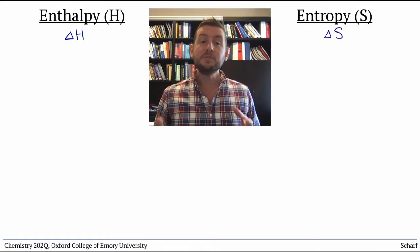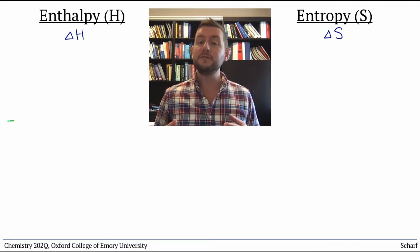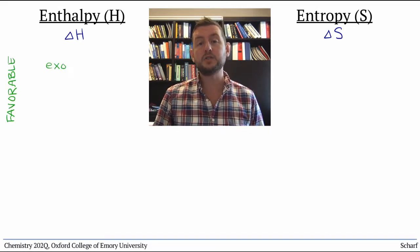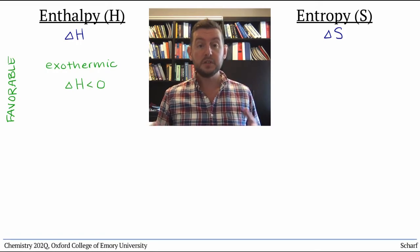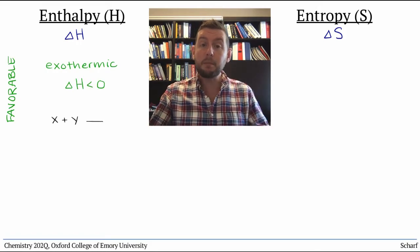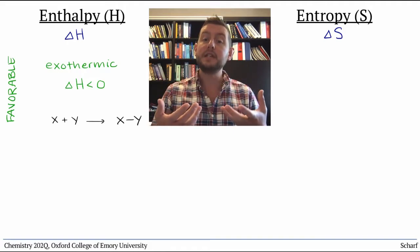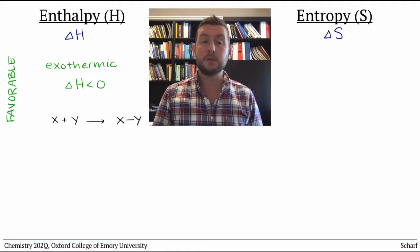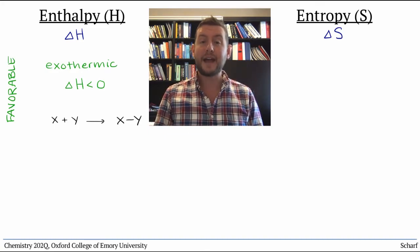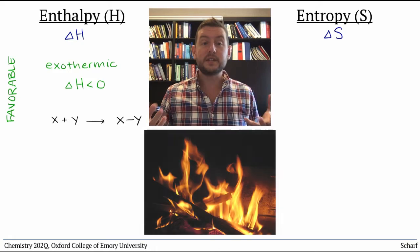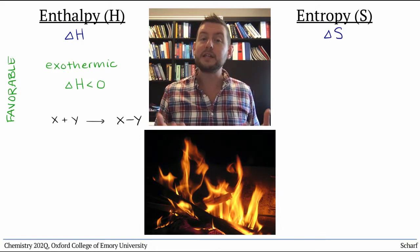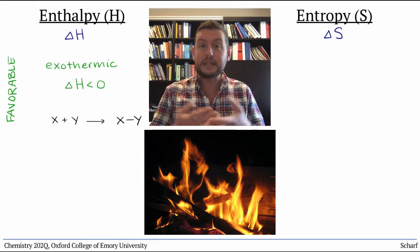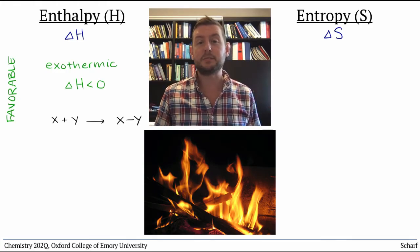In terms of enthalpy, processes tend to be most favorable when they are exothermic, when delta H is negative. For instance, the formation of chemical bonds leads to a stable, favorable arrangement of nuclei and electrons, and such processes are exothermic. Once you set a piece of firewood alight, for instance, it generally continues to burn.